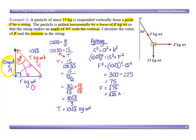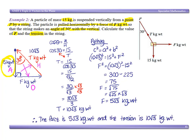So our force is the square root of 75. That's square root of 25 times square root of 3, which is 5 root 3. Therefore, the force is 5 root 3 kilogram weight, and the tension is 10 root 3 kilogram weight.